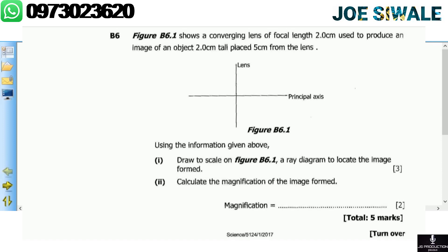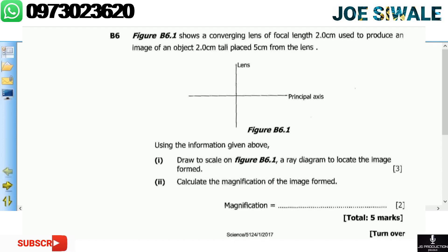Specifically we're looking at question B6. The question reads: Figure B6.1 shows a converging lens of focal length 2.0 centimeters used to produce an image of an object 2.0 centimeters tall placed 5 centimeters from the lens. There's the lens and the principal axis. Using the information given above, Part 1: draw to scale on Figure B6.1 a ray diagram to locate the image formed — three marks. Part 2: calculate the magnification of the image formed — two marks.